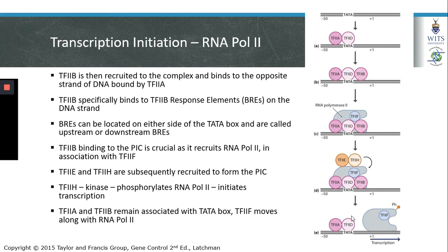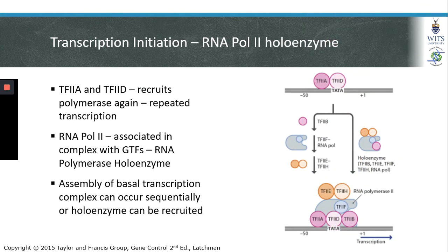Transcription factors 2A and 2D remain located at the TATA box after RNA polymerase 2 moves along the DNA strand to transcribe the first few nucleotides. Because TF2A and TF2D remain at the TATA box, they can serve as binding sites for TF2B and the remaining members of the pre-initiation complex, allowing repeated recruitment of RNA polymerase 2 and repeated transcription of the same gene.